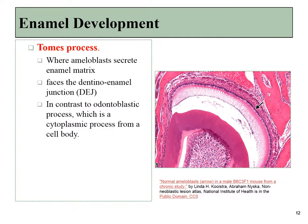Tomes process is the structure from where enamel is secreted, and it faces the dentino-enamel junction — just a small bump on the ameloblasts. We'll contrast that in the next chapter with the odontoblastic processes of the odontoblasts. Those cells will remain in contact with all of the dentin that they produce, whereas the ameloblasts are only in contact with the most recent layer of enamel that has been formed.